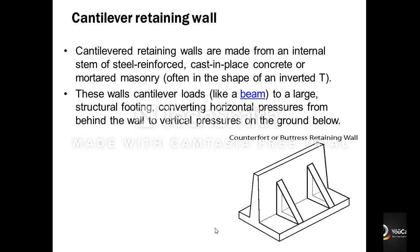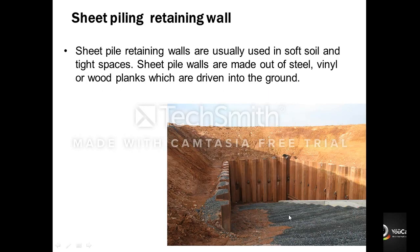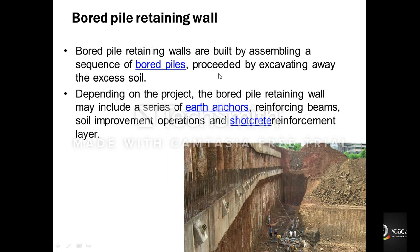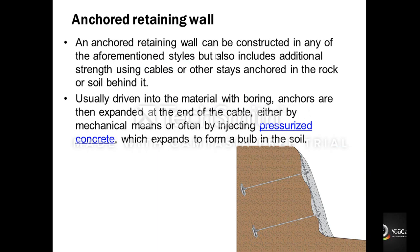The second type is the cantilever retaining wall, made up of an internal stem of steel-reinforced concrete, cast in situ. It is shaped like an inverted T and acts like a beam, converting horizontal pressure from behind the wall into vertical pressure on the ground below. The third type is the sheet piling retaining wall, which uses sheets to retain the soil mass. The fourth is the bored pile retaining wall. A similar type is used in hilly areas where the wall is anchored by cables.